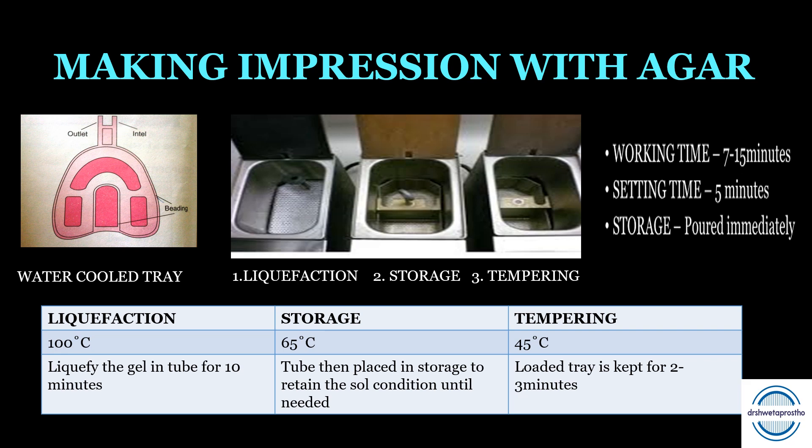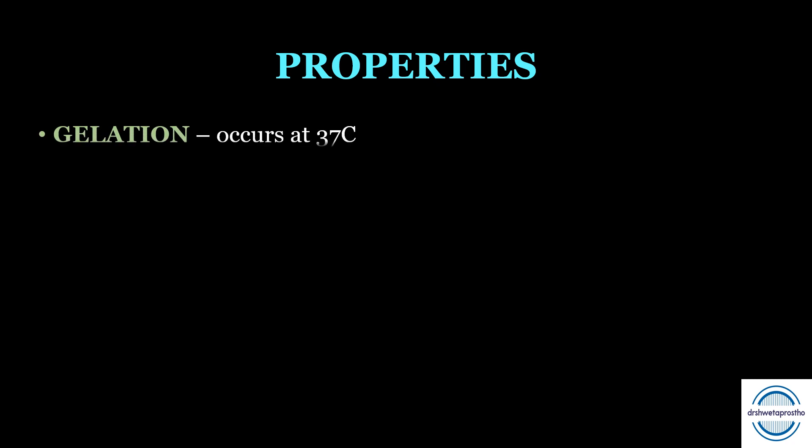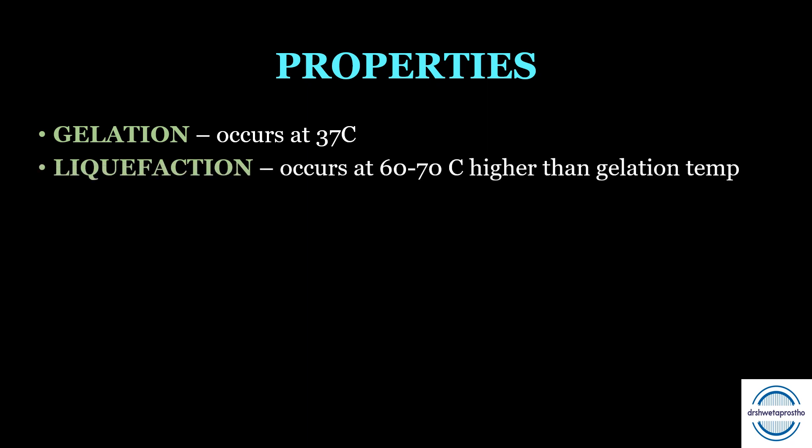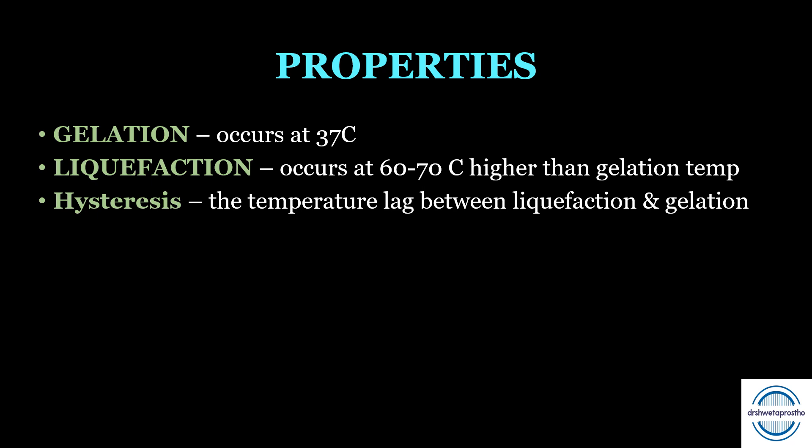Properties of agar: gelation of agar takes place around 37°C, which is the mouth temperature, and liquefaction occurs at 60 to 70°C. The liquefaction temperature is higher at around 100°C. The temperature lag between liquefaction and gelation is called hysteresis — a common viva question.